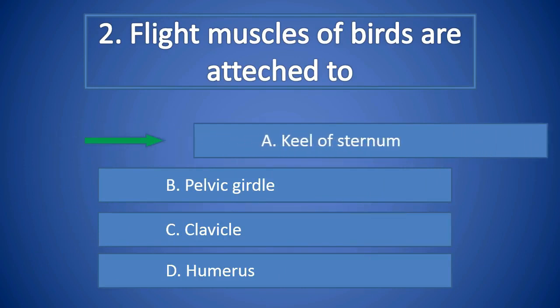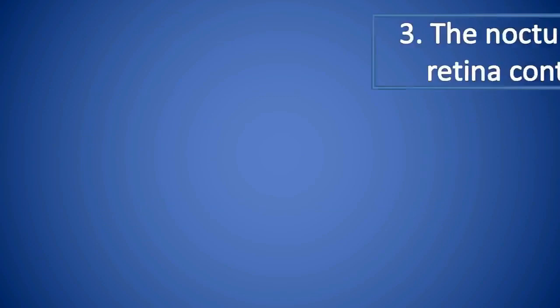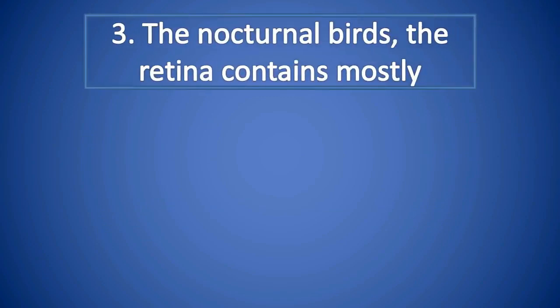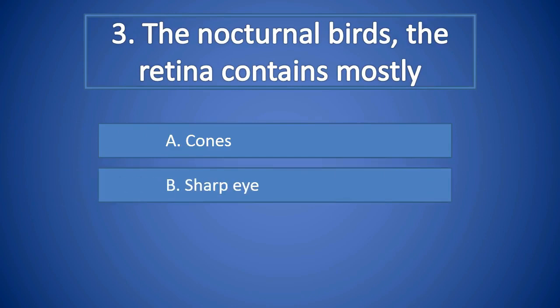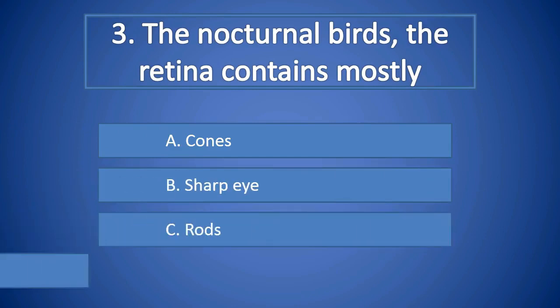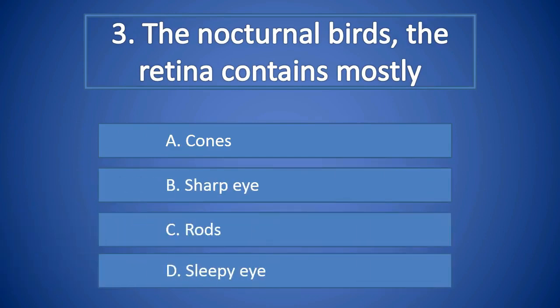Question Number 3: In nocturnal birds, the retina contains mostly A. Cones, B. Sharp eye, C. Rods, D. Sleepy eye. Right answer is C. Rods.